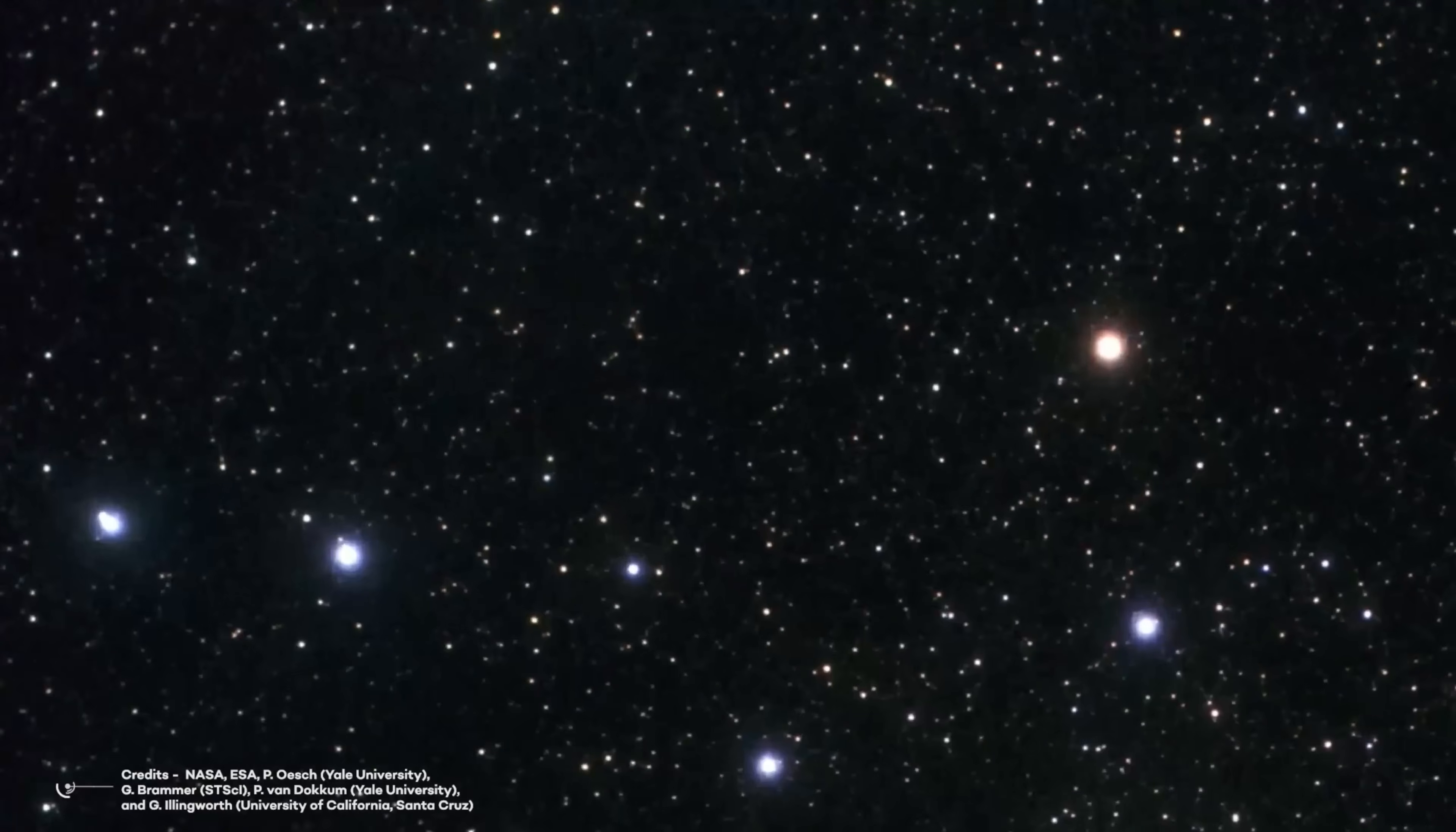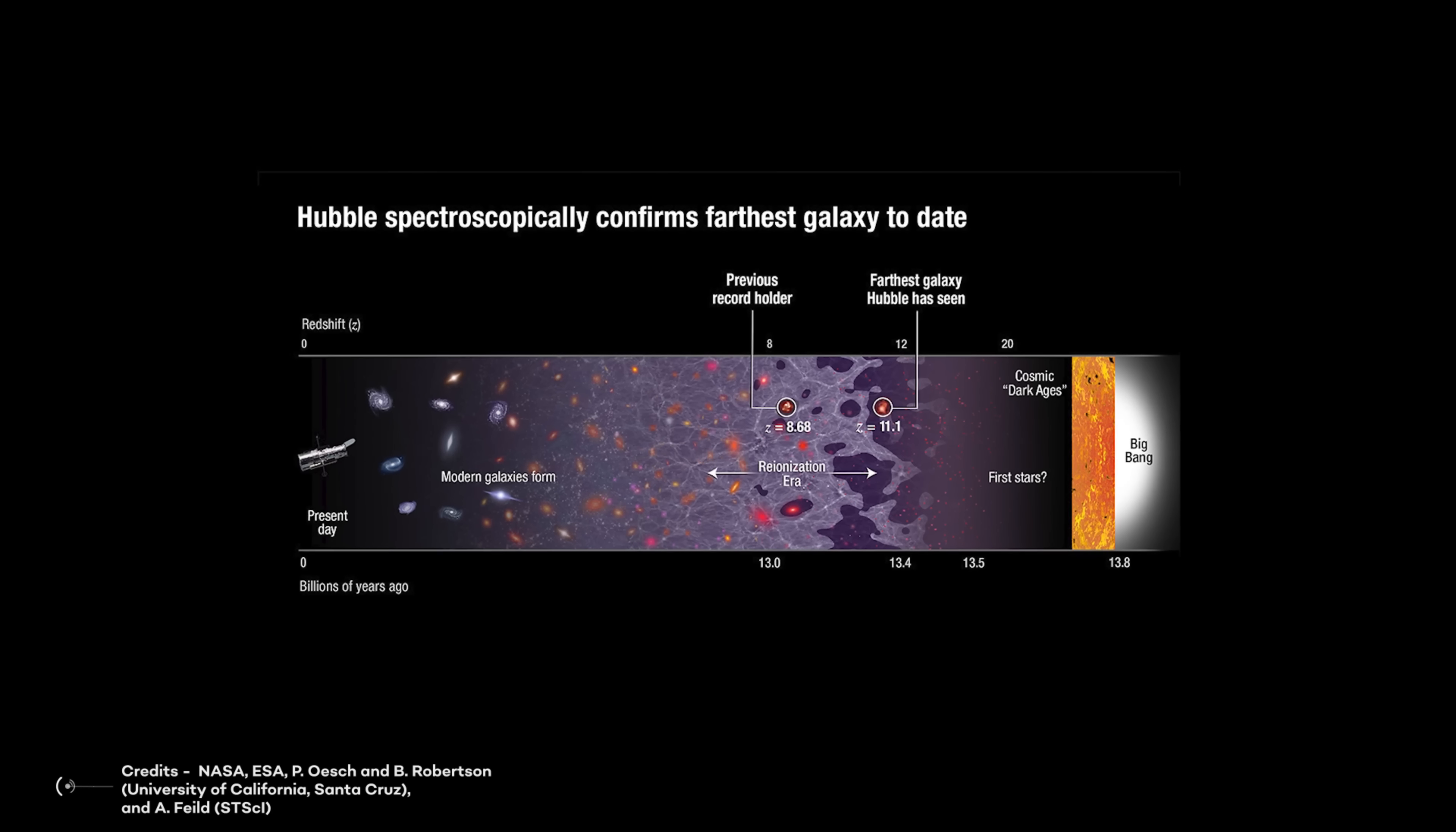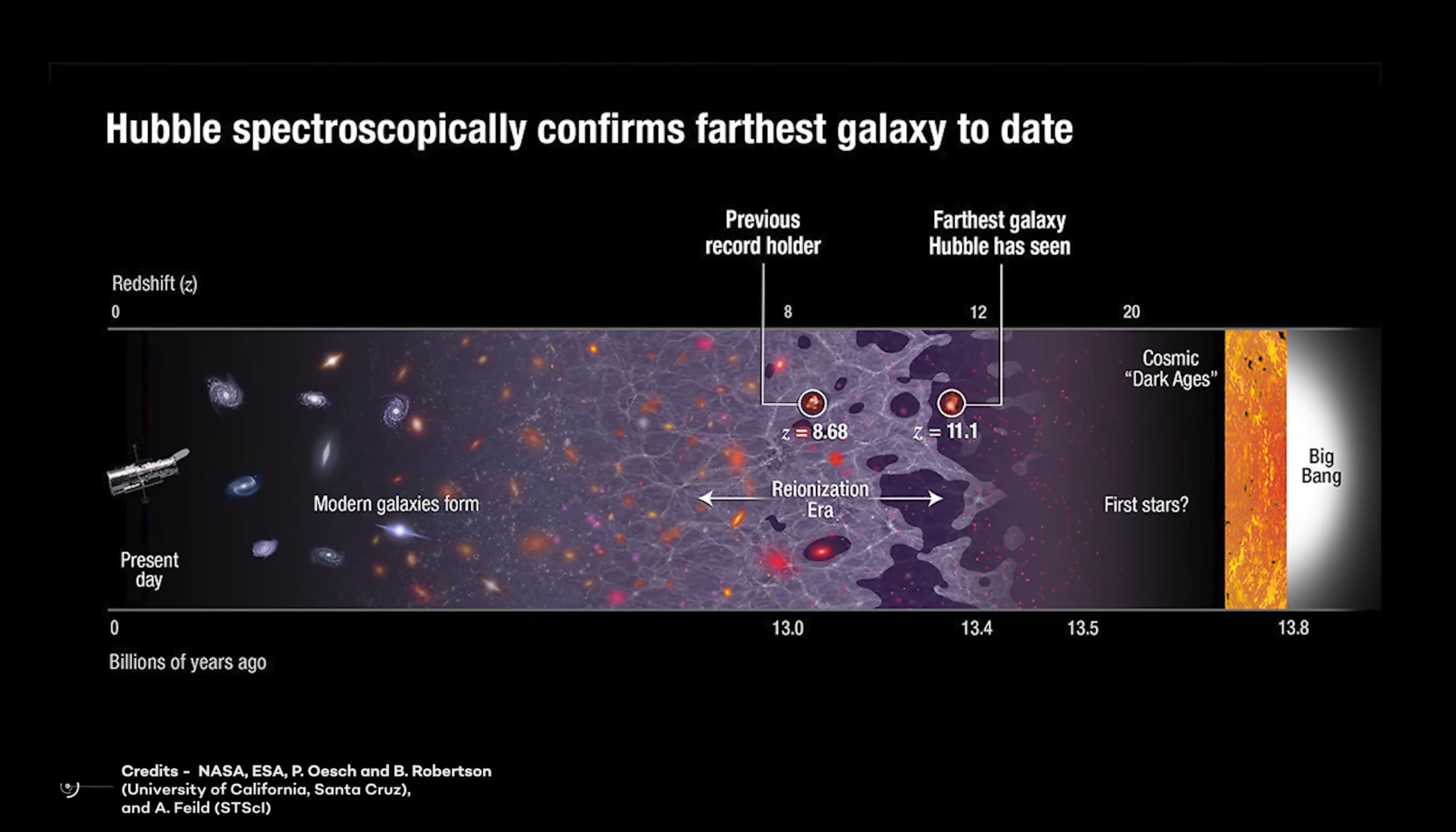Until a few days ago, the record for the most distant galaxy was in fact held by GNZ 11, a primordial dwarf galaxy observed by Hubble and 13.4 billion years distant in time. Value this quite accurately, since it was possible to highlight a very precise line in the spectrum and compare its redshift with that of the same line observed in a normal terrestrial laboratory.